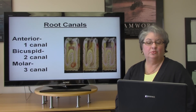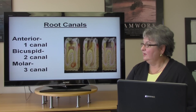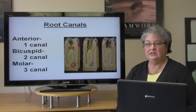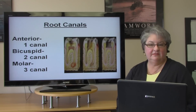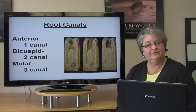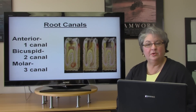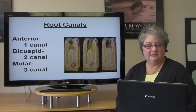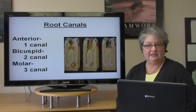Here is a root canal. The anterior teeth have one canal, the bicuspids have two canals, and the molars have three canals. The dental office usually charges accordingly, with a tooth that has one canal being less expensive, while a molar root canal is more expensive.